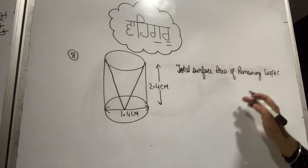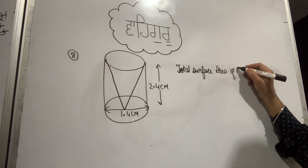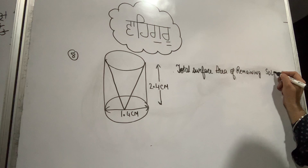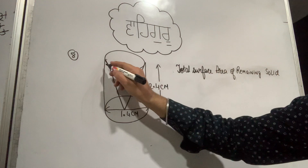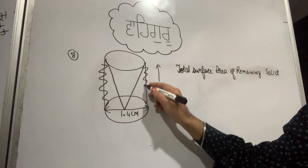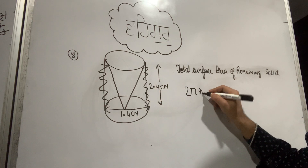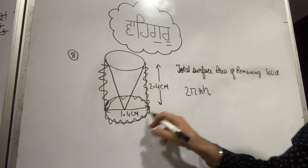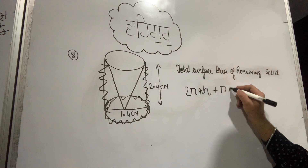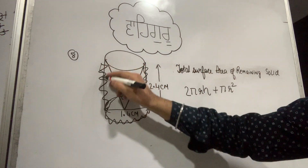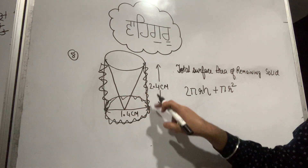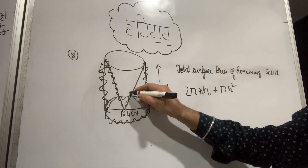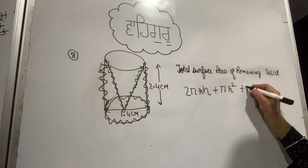Find the total surface area of the remaining solid. The surface area of the remaining solid includes the top circle and the curved surface of the cone, which is pi times r times l.